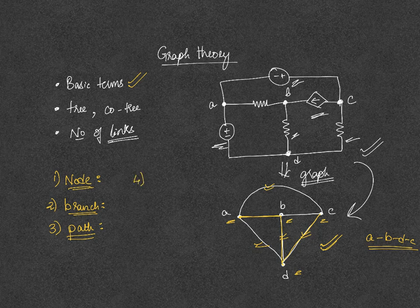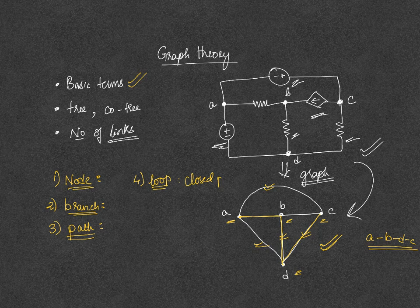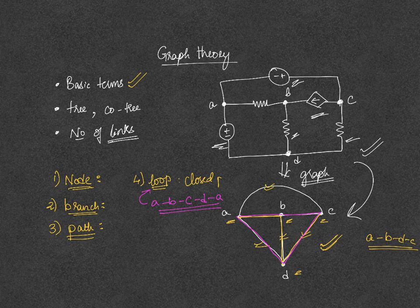The next term is a loop. A loop is any closed path. For example, traversing from A to B, B to C, C to D, and then again to A — so A, B, C, D, A — this is a closed path and it will form a loop.